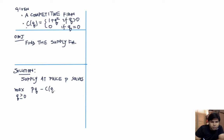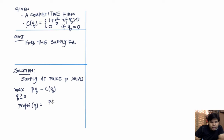The profit expression for this competitive firm is: profit as a function of quantity equals P times Q minus the cost, which is minus 1 minus Q², if Q is positive, and 0 if Q is 0.